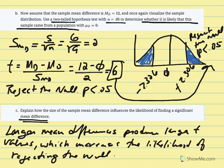If condition 2 is producing significantly different scores from condition 1, that gives us evidence against the null. The null says there will be no difference, so the larger those differences become, the more likely we are to reject the null hypothesis.